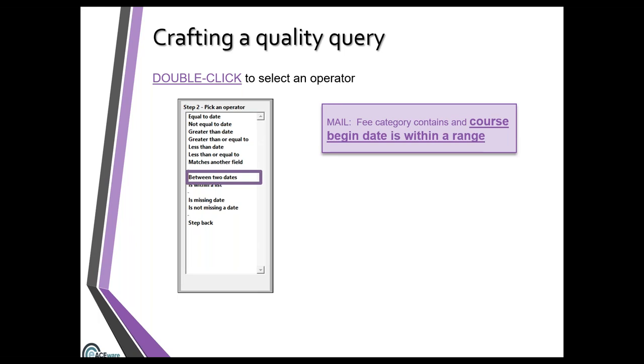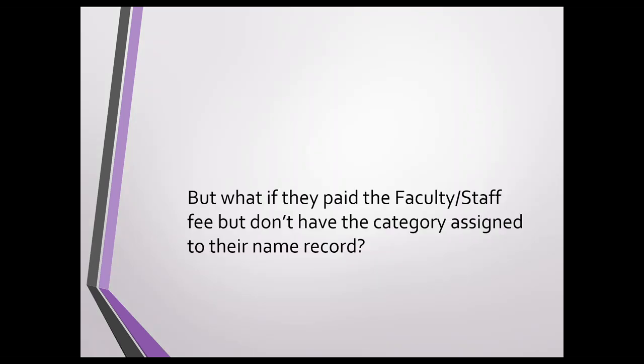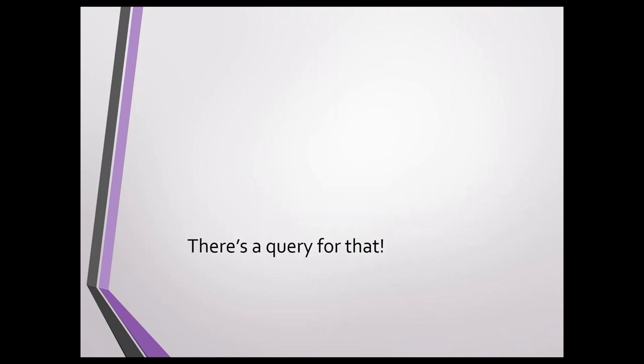That's the straightforward version — fee category assigned, registrants found. But what if for some reason we have folks who enrolled in a course and got that fee — maybe they were on the phone, the staff gave them the discount — but then didn't go back and assign it to the name record? That's a potential problem because we want this mailing list to be accurate and not leave folks out. But there's a query for that — a more complex one.